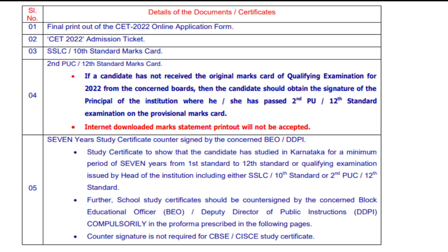For previous year students or repeaters, you need to bring the original marks card. If your results have not yet come and you have sent for revaluation or the exam is still pending, and your results are not yet out, you should take a provisional marks card. If a candidate has not received the original marks card of the qualifying examination for 2022 from the concerned board, then the candidate should obtain the signature of the principal of the institution where they passed their 2nd PUC or 12th standard on the provisional marks card.